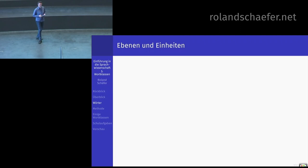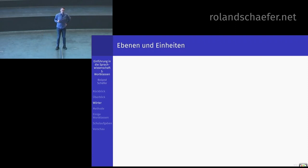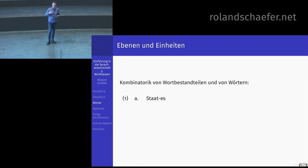Was sind Wörter? Wir reden in der Linguistik immer über Ebenen: Phonologie, Morphologie, Syntax, Semantik. Auf diesen Ebenen gibt es jeweils verschiedene Einheiten. In der Phonologie gibt es Segmente und Silben, in der Morphologie gibt es Wörter und Wortbestandteile, in der Syntax gibt es dann die Wörter und so weiter. Jetzt sehen wir, dass es eine Kombinatorik gibt. Bestimmte Regeln der Kombinatorik von Wortbestandteilen: Staat können Sie mit S kombinieren und bilden die Form Staates, aber Türes geht nicht.